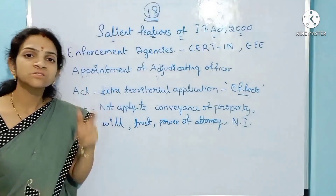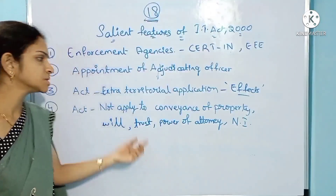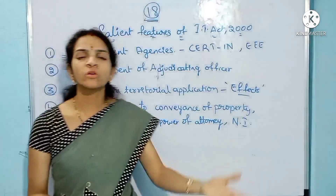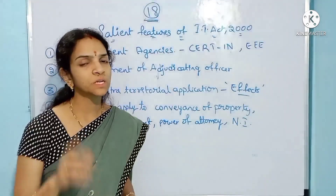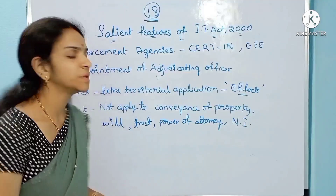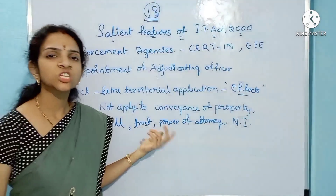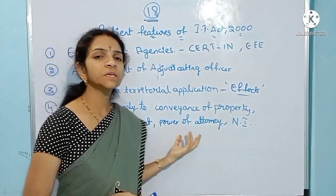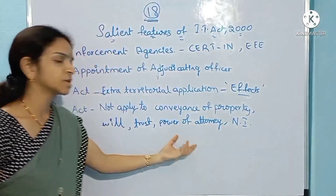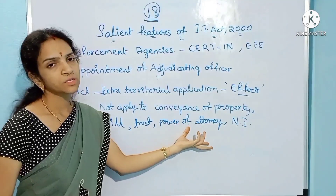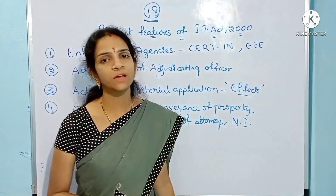The last point is the act does not apply to certain things. What are they? Conveyance of property, any kind of transfer of property — the IT Act is not applicable. Next is wills, then trusts, and then General Power of Attorney — in these cases also the act is not applicable.